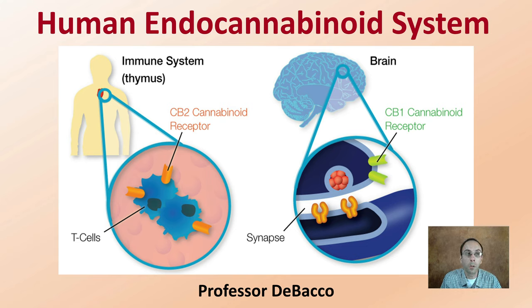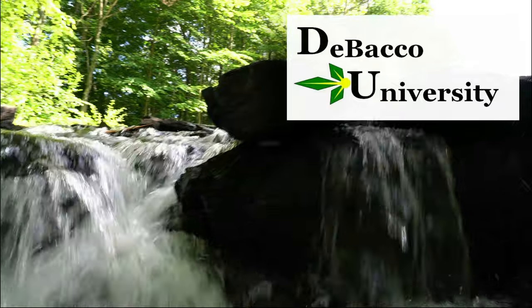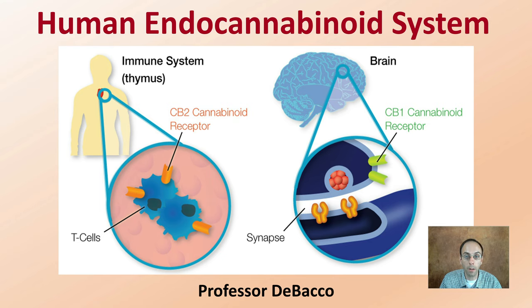This Debaco University video will provide information about the human endocannabinoid system — how brain receptors and the immune system relate to CB1 receptors and CB2 receptors. Let's get into the human cannabinoid system, focusing on the immune system, the thymus gland and CB2 cannabinoid receptor and T cells, as well as the brain with the CB1 cannabinoid receptor. The hope here is to break it down in simple terms.